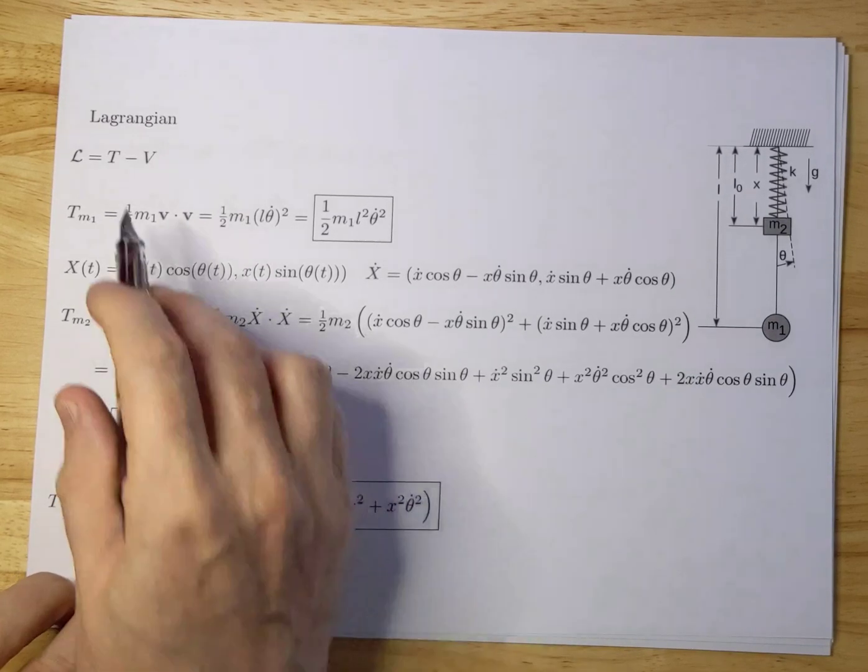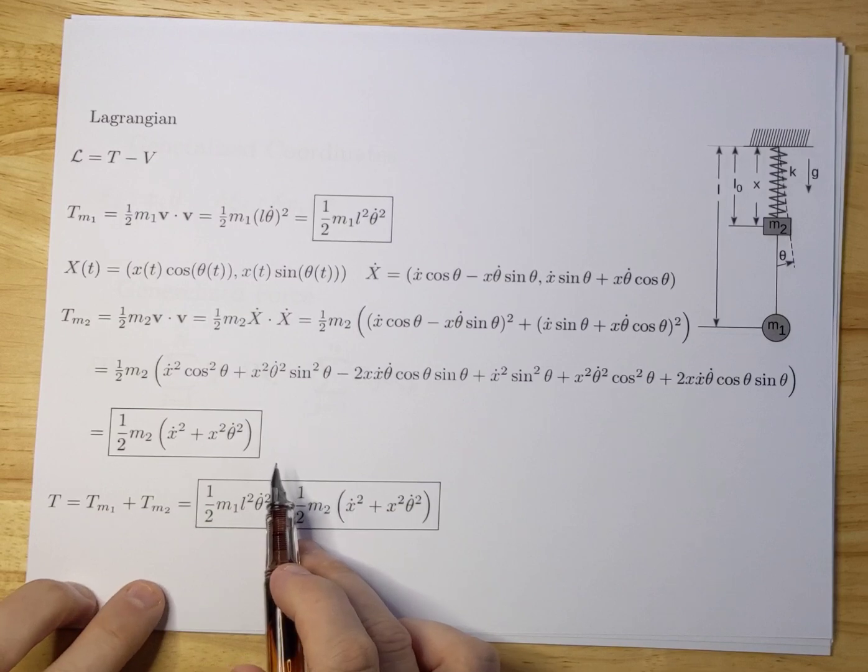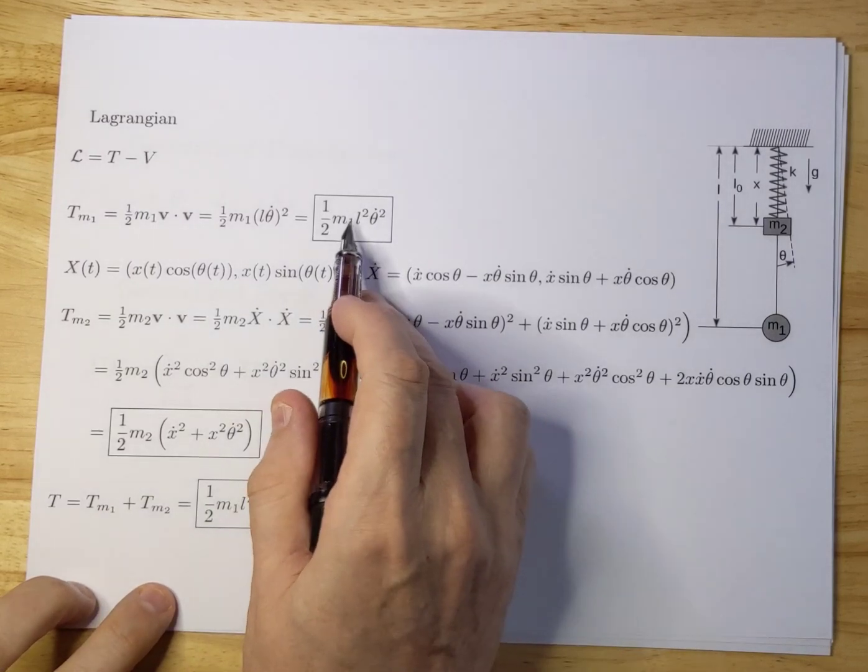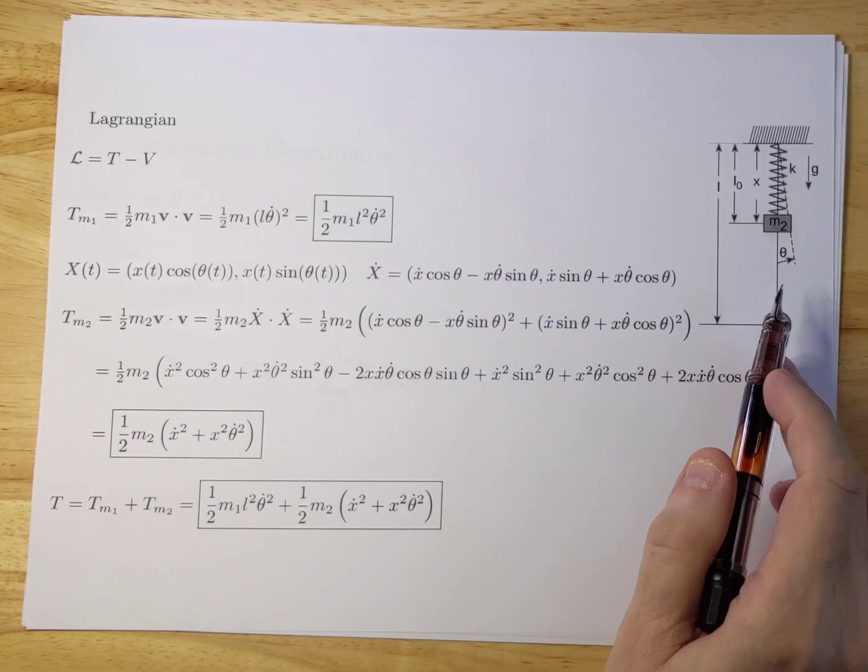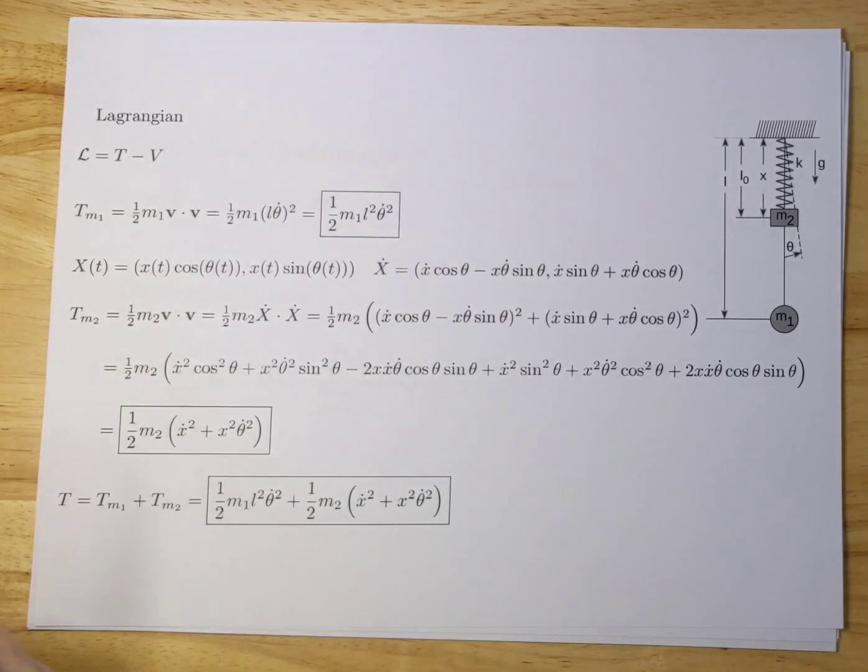Now we have all the kinetic terms together. We have two terms, you add them up and you have the total kinetic energy of the system.